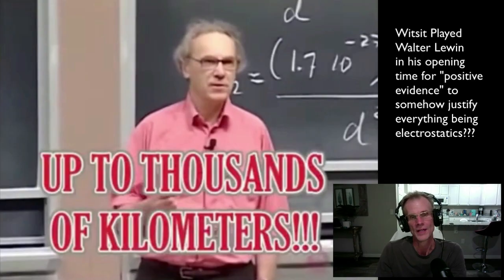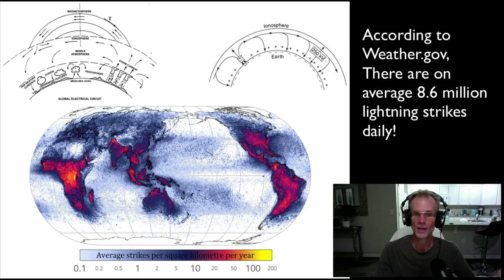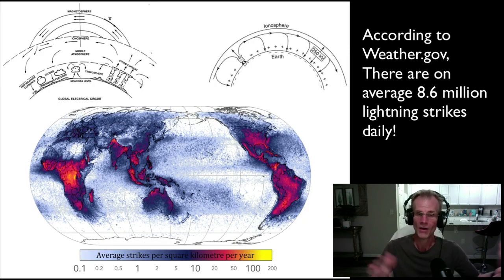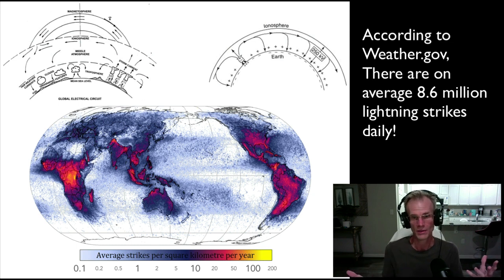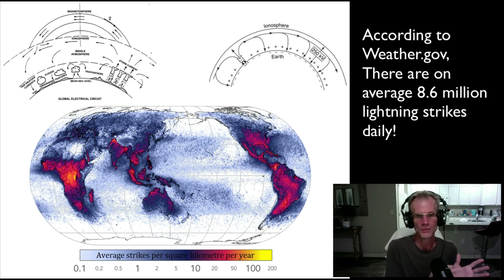This argument of electrostatics being 10 to the 36 times stronger than gravity is somehow, in his mind, proof that it's got to be electrostatics. Contrasting to what he said about thunderstorms, now all of a sudden the electrostatics is very, very strong. Again, this is kettle logic — he's using this faulty fallacy of logic to explain his failed model in different contradictory situations.